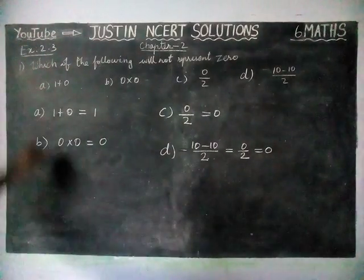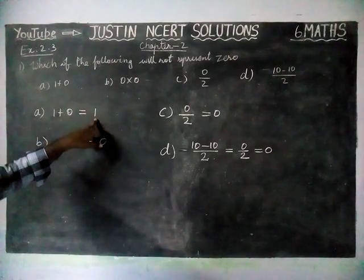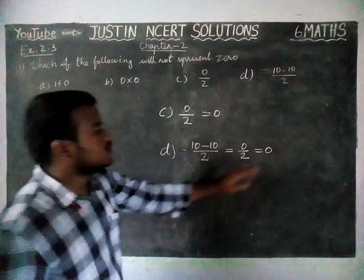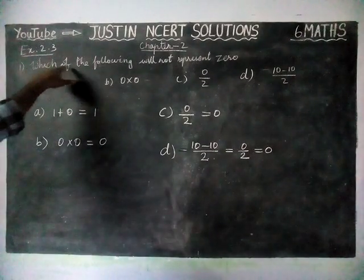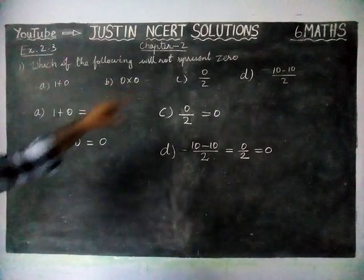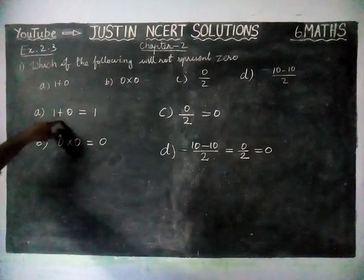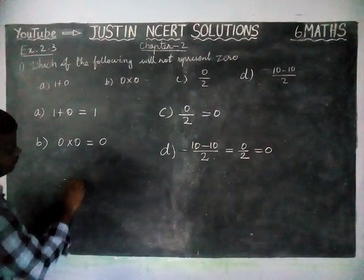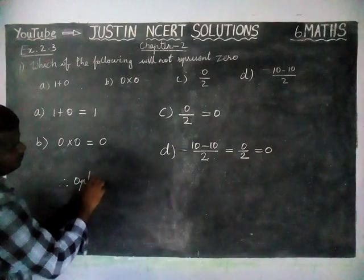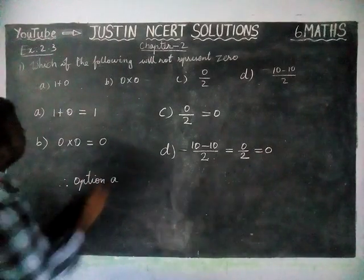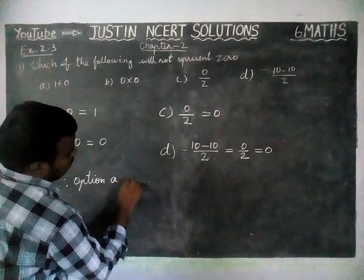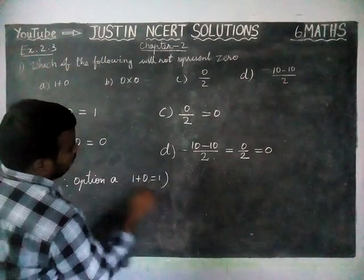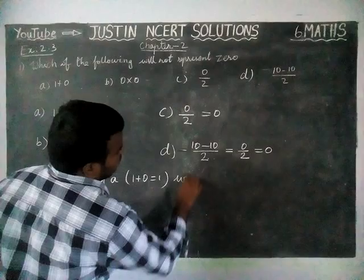So now: Option A answer is equal to 1, Option B is 0, Option C is 0, Option D is 0. According to the question — which of the following will not represent 0? — Option A will not represent 0. Therefore, 1 plus 0 equals 1 will not represent 0.